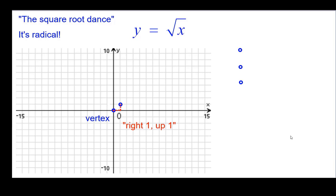And then we're going to go right 1 and up the square root of 1, which is 1. Then right 4 and up the square root of 4, which is 2. From the vertex, right 9 and up the square root of 9, which is 3. And then right 16 and up 4.